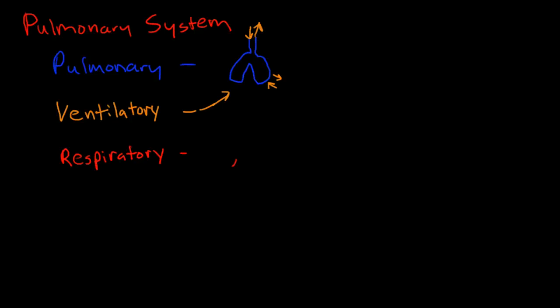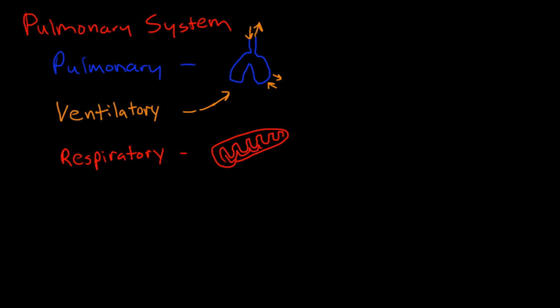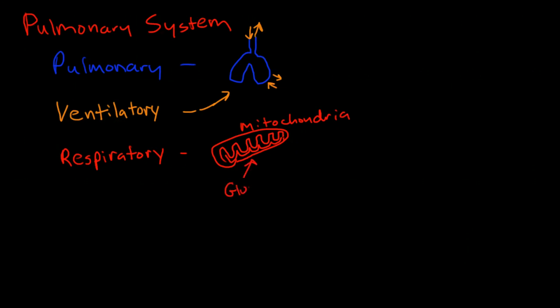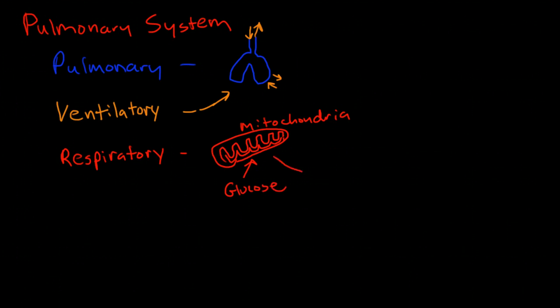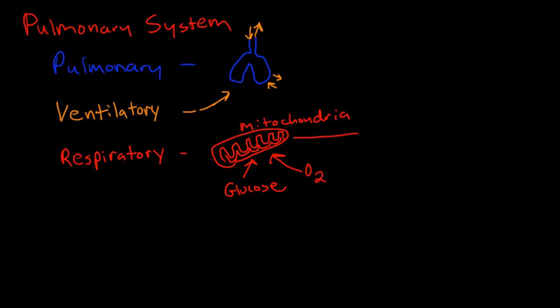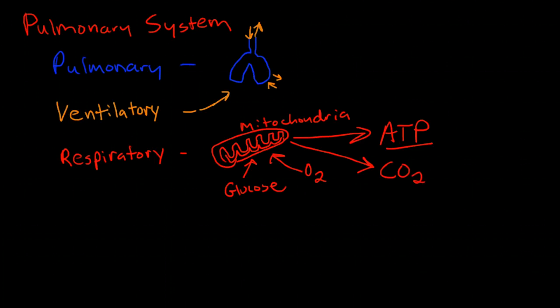Respiration is the process of burning substrates to create energy within the cells. Specifically, it's the use of oxygen in a chemical reaction inside mitochondria. You're having a substrate like glucose, protein, or fat exposed to an enzyme and oxygen in the mitochondria, and then out comes energy stored in the form of ATP and waste products, one of which is carbon dioxide.